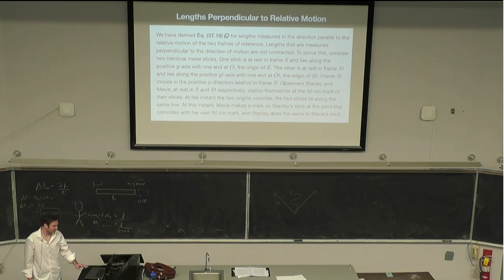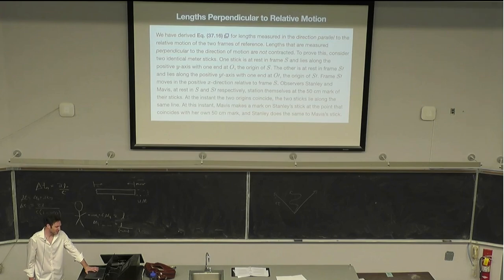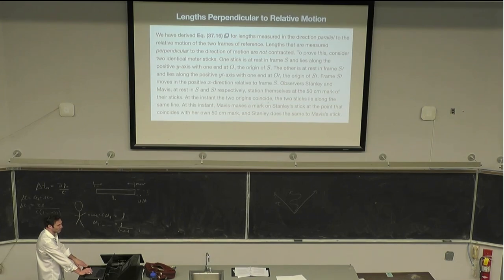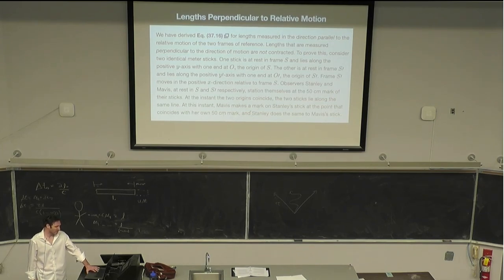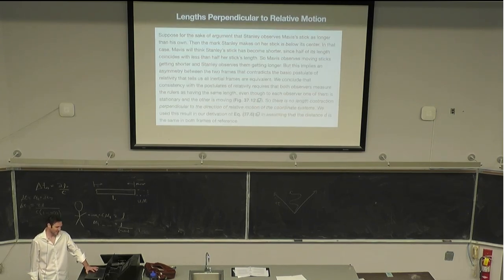Observers, Stanley and Mavis, at rest in S and S prime respectively, station themselves at the 50 centimeter mark of their sticks. At the instant the two origins coincide the two sticks lie along the same line. So at this instant Mavis makes a mark on Stanley's stick at the point that coincides with her own 50 centimeter mark and Stanley does the same to Mavis's.